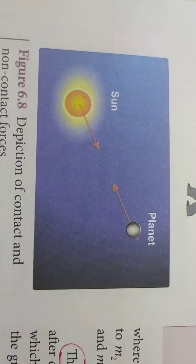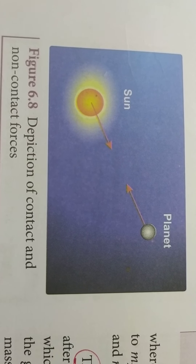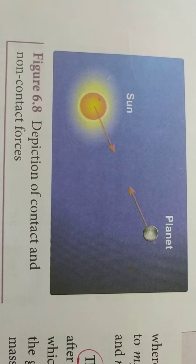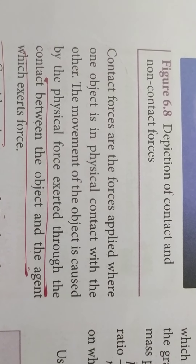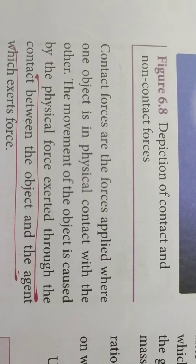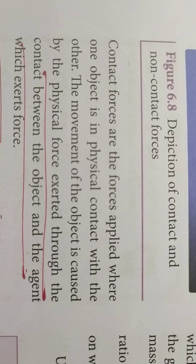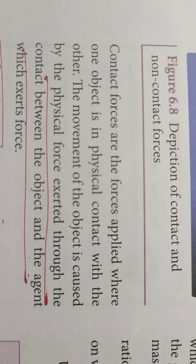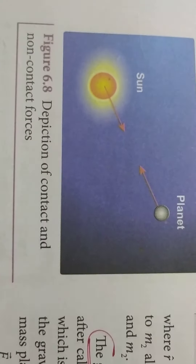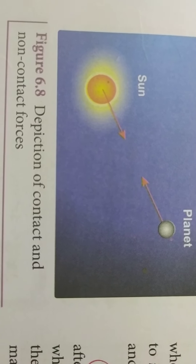Suppose if we see the sun and a planet, there is some attractional force between the sun and planet, and this is an example for non-contact forces. The movement of the object — suppose if the planet revolves around the sun — it is due to the physical force exerted through contact between the object and the agent which exerts force. But here, there is no such interaction between sun and planet, so this is an example for non-contact forces.